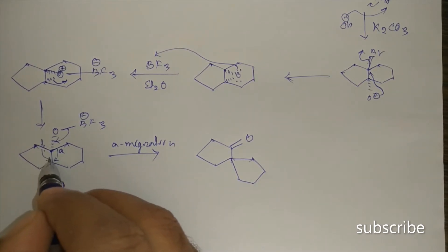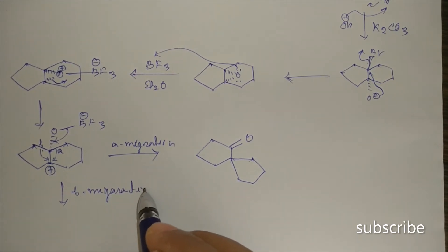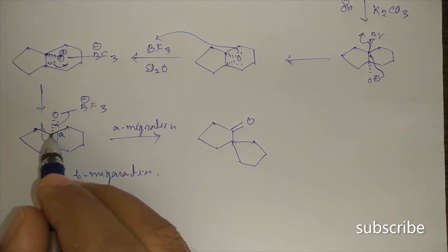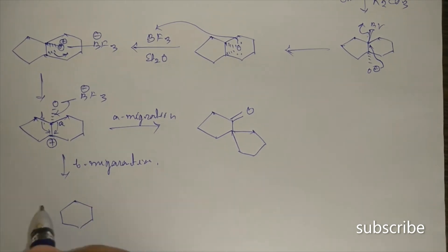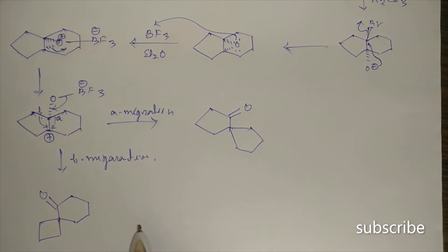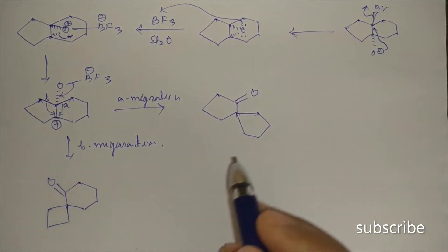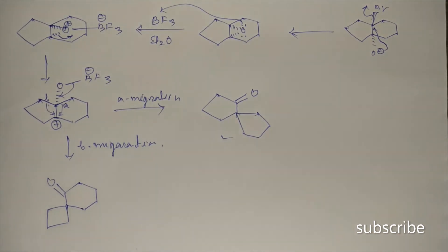If 'b' migration takes place, this bond migrates to the carbocation carbon, giving a four-membered ring fused with a six-membered ring, with the keto group at the alpha carbon of the spiro center. Since a four-membered ring fused with a six-membered ring is less stable than a five-membered ring fused with a five-membered ring, the five-five spiro product is the major product.